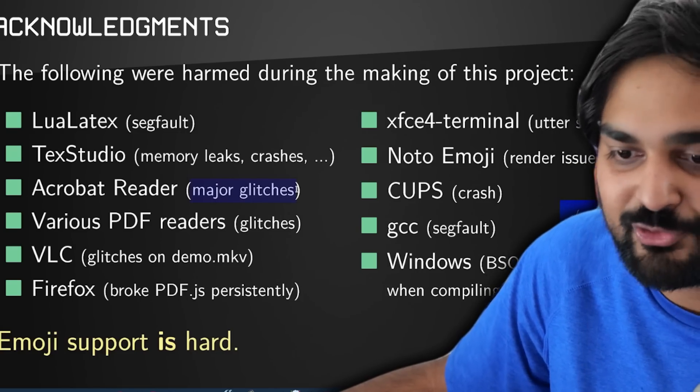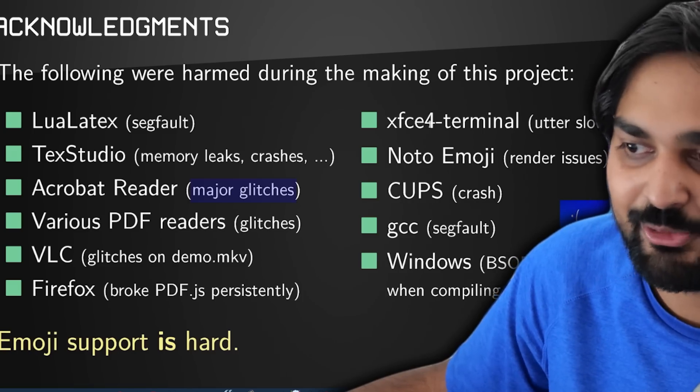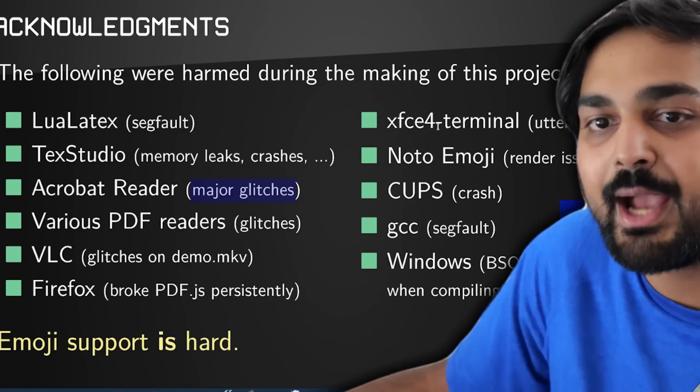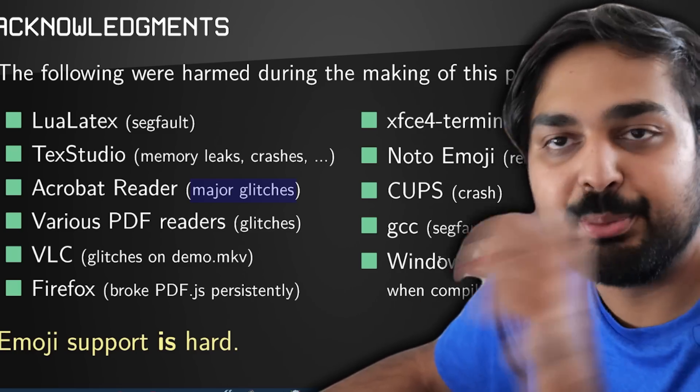Some software did in fact have a real hard time with this. Even if you can hack the system, not all computers and software can properly support it. Their findings showed that Adobe Acrobat Reader gave major glitches, VLC gave glitches on specific MKV files, and XFCE4 terminal gave so much slowness they had to note it down. On Windows, it gave a BSOD — blue screen of death. Firefox? Done. Even when you can get access and launch some nastiness, emojis are a troubled vice to work with.